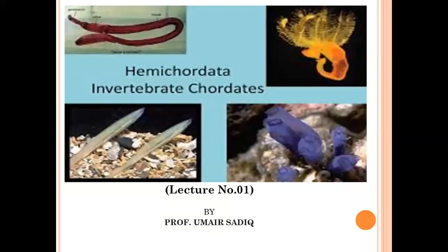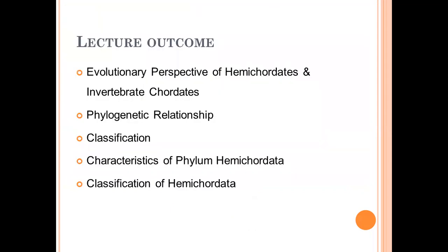Assalamu alaykum students. Today we will start a new chapter. Chapter number 17 from Miller and Harley's 5th edition — Hemichordata and Invertebrate Chordates. First of all, we have completed the previous phylum. In today's lecture, we are looking at the outcomes of this lecture.